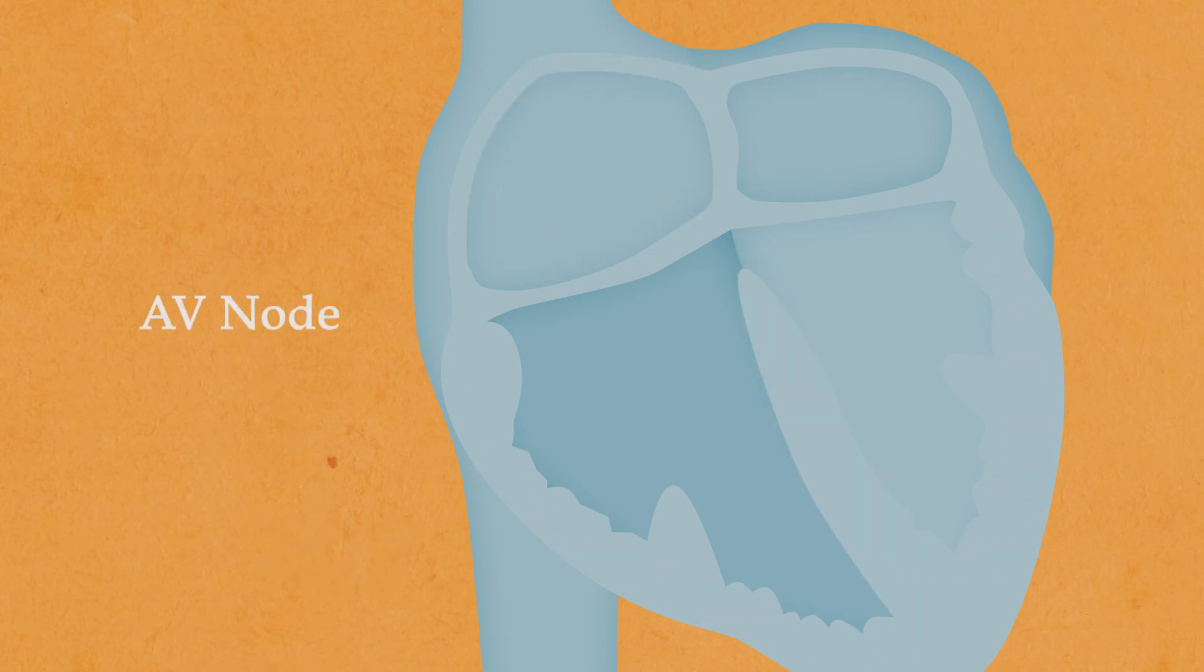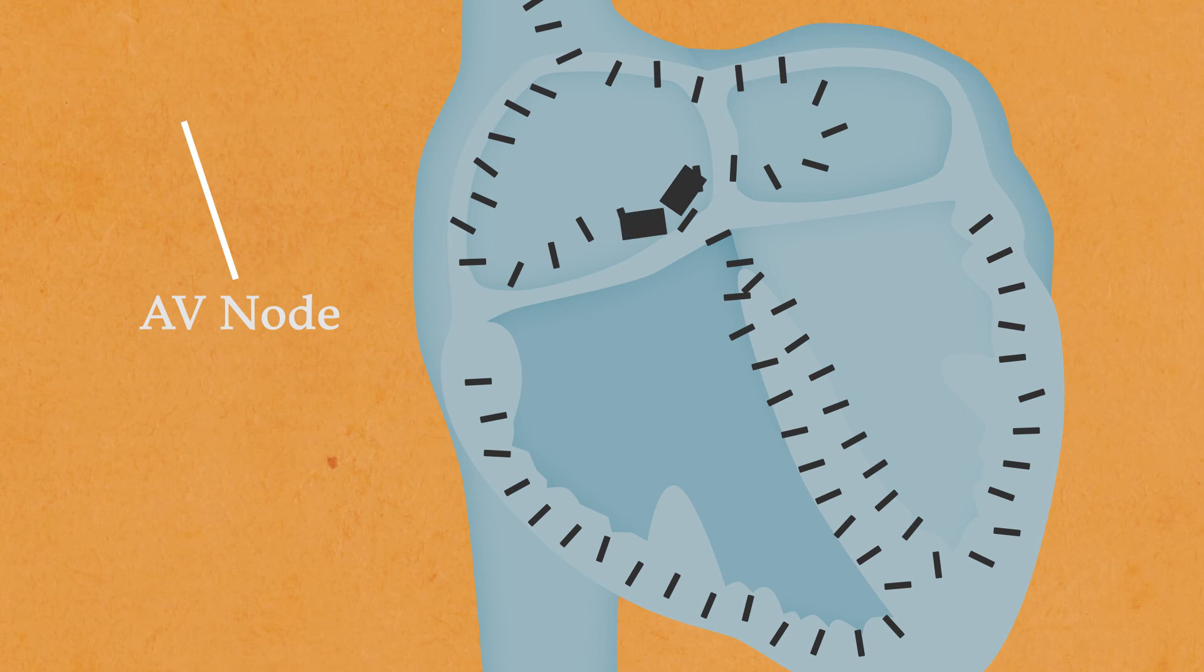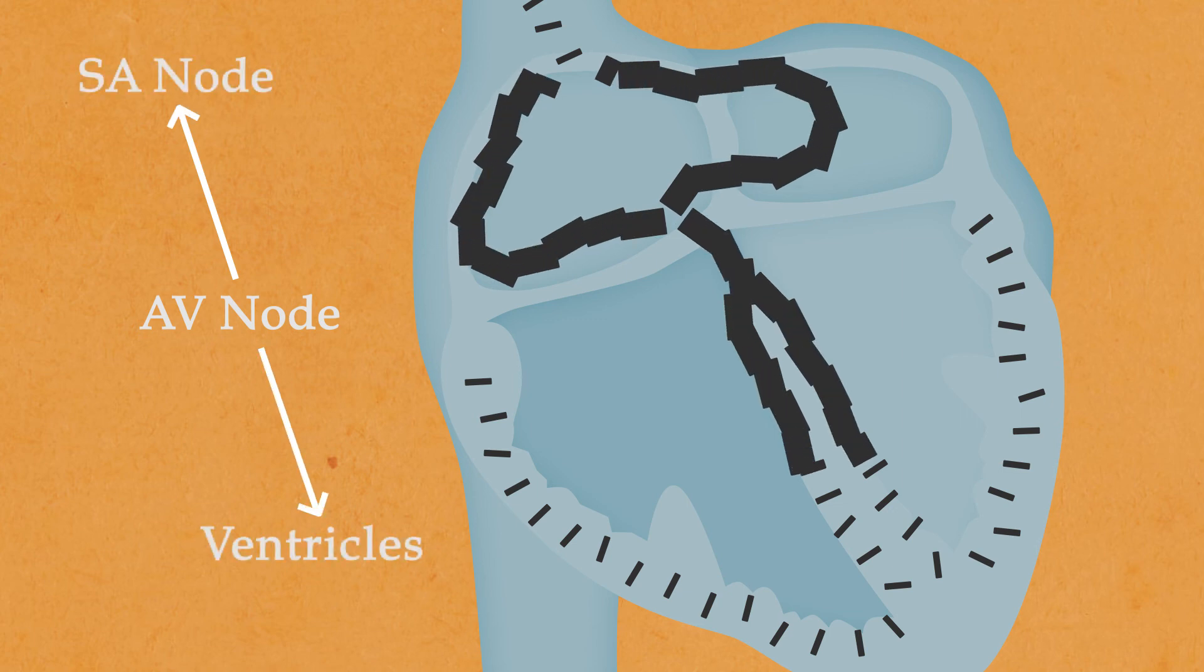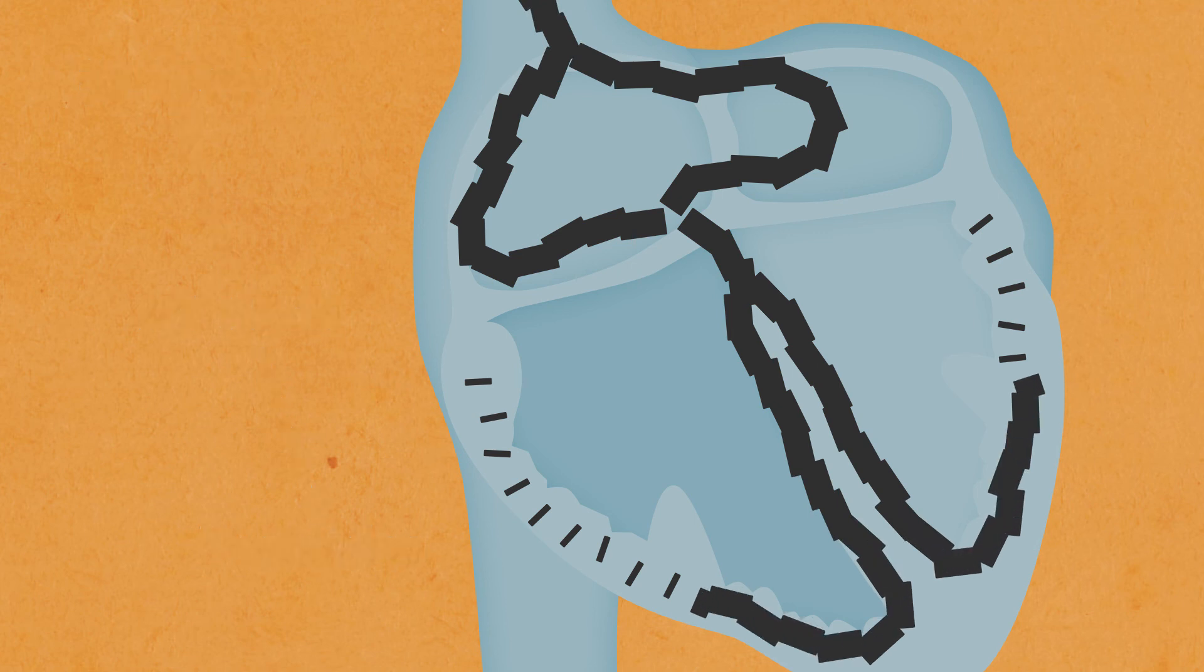When the AV node takes over, the dominoes and the action potential travel in both directions, backwards towards the SA node and atria, and forwards towards the ventricles. Awesome, this session has been really productive. We'll have to do this more often. Definitely.